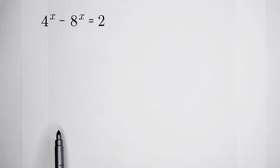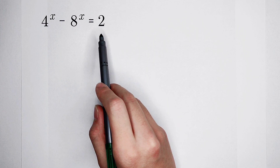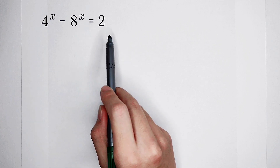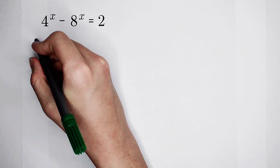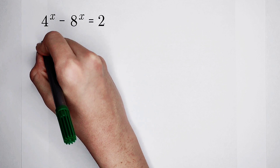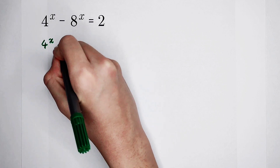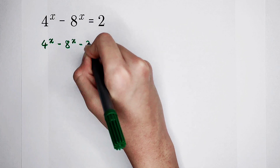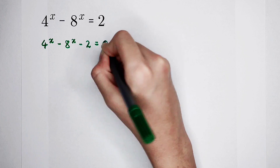Of course, first we should remove the 2 from the right-hand side. That means we should subtract 2 from both sides. And you get 4 to the power of x minus 8 to the power of x minus 2, and the right-hand side is just 0.